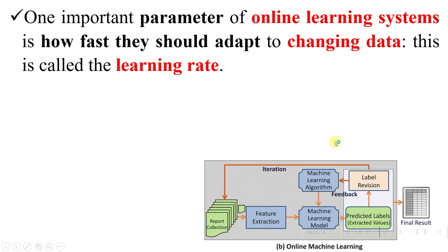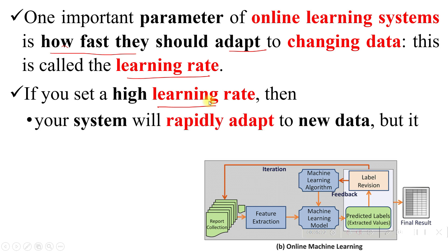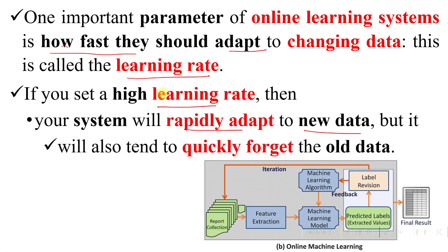One important parameter of an online learning system is how fast it should adapt to changing data — this is called the learning rate. If you set a high learning rate, your system will rapidly adapt to new data, but it will also tend to quickly forget the old data.